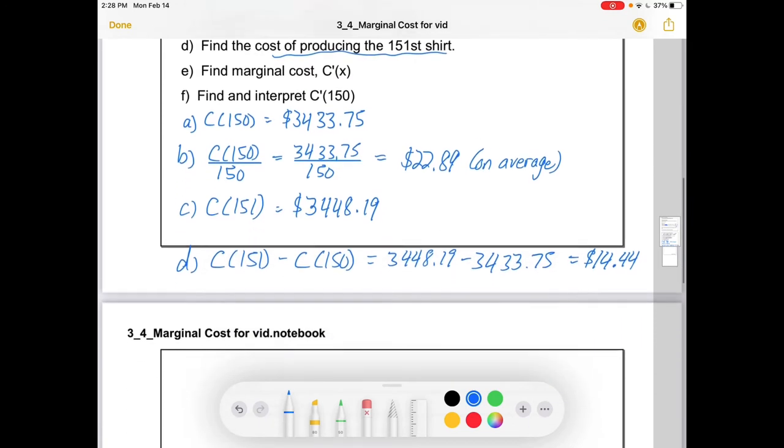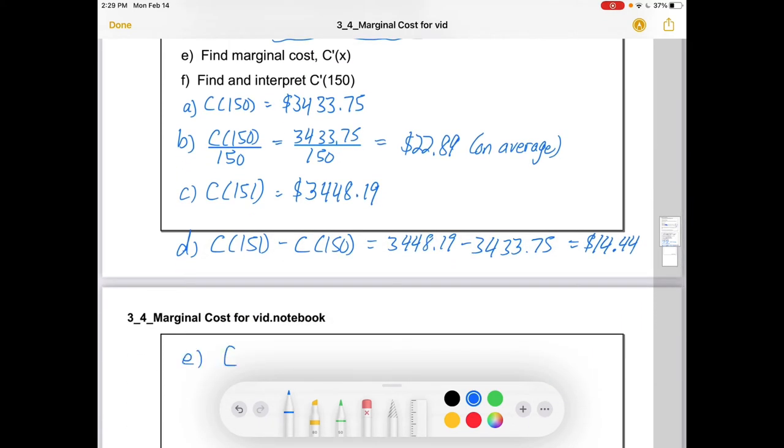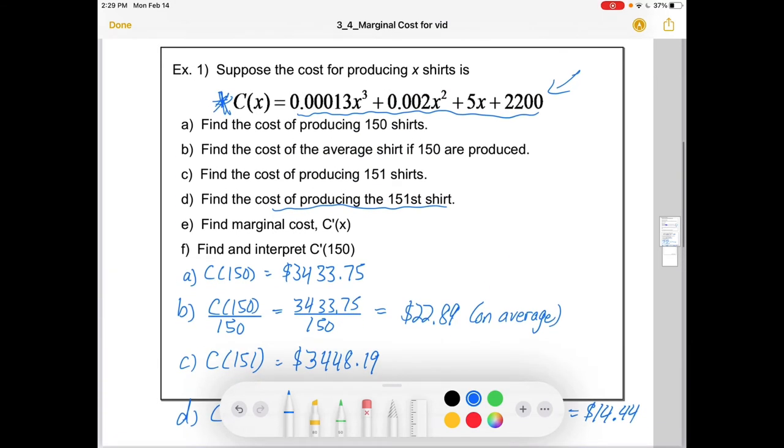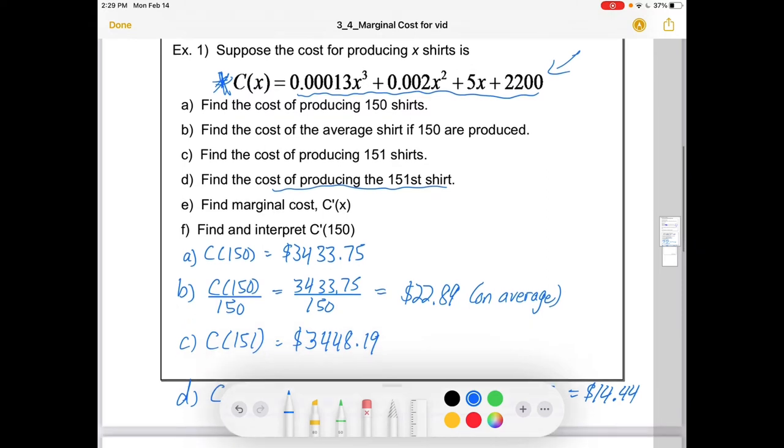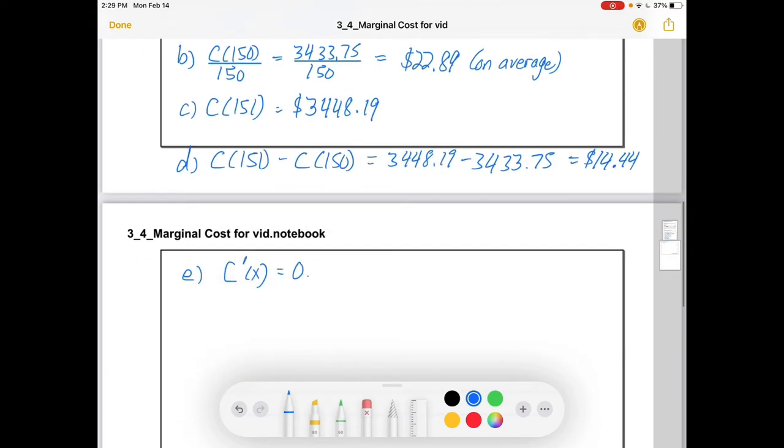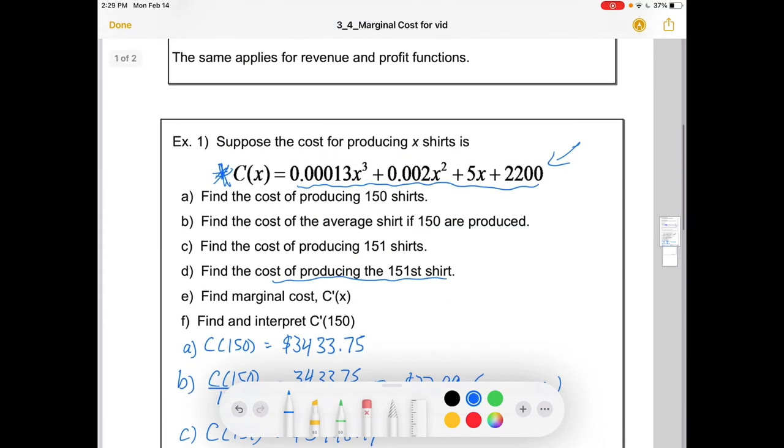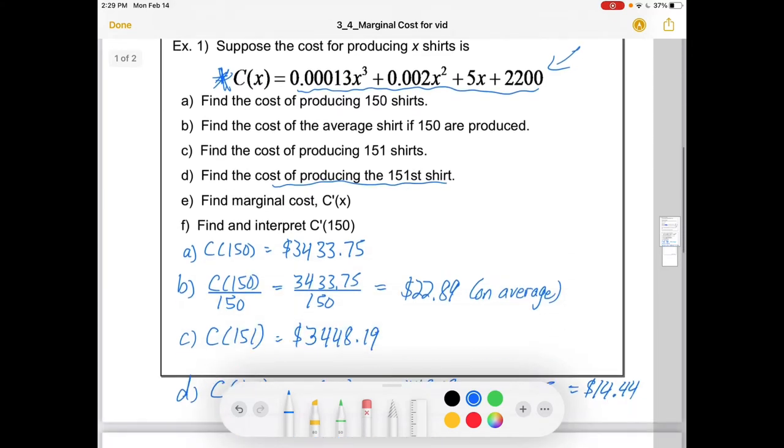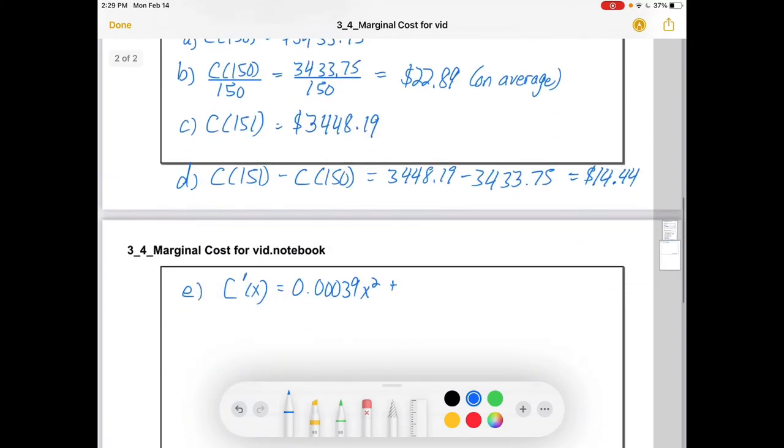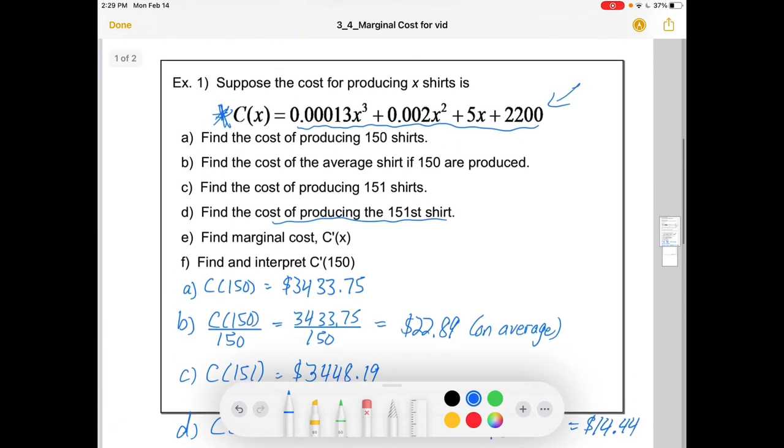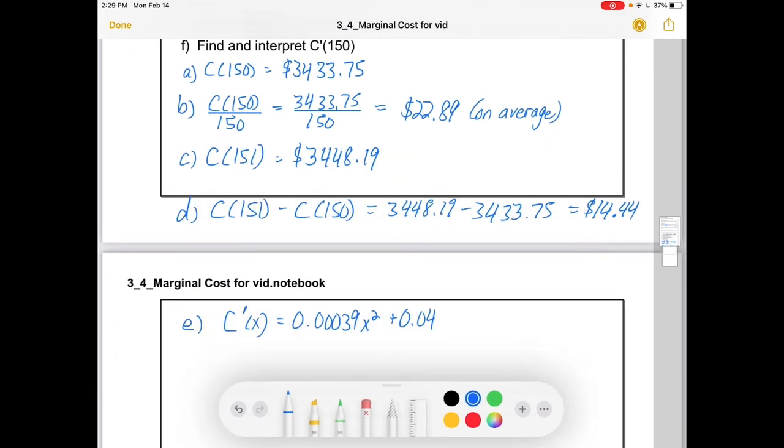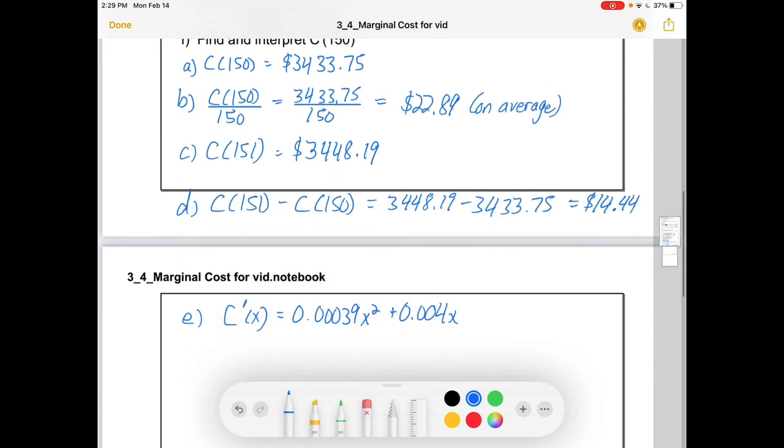Now we're going to do something that seems a lot more abstract. We're going to find C prime of X. So let's check it out. We had 0.00013 X cubed. So that's going to turn into 0.00039 X squared. The next one's going to be 0.004 X. And then our 5X will turn into 5 and our 2200 will go away.